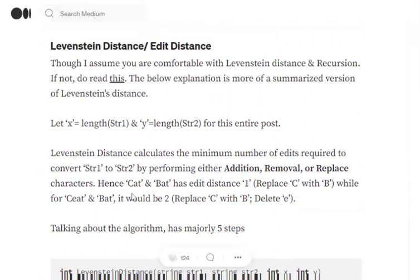For example, if we have two strings cat and bat, the Levenshtein distance equals 1 because we need to perform a replacement operation by replacing C with B.